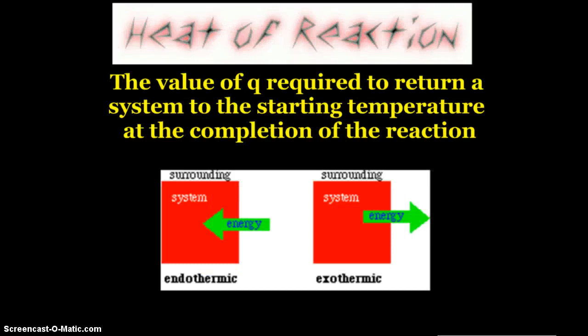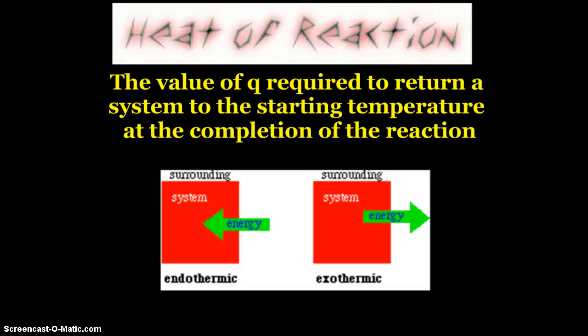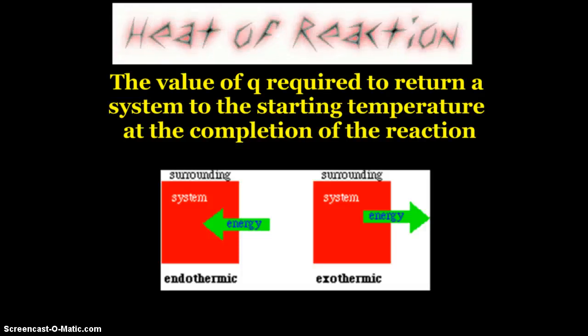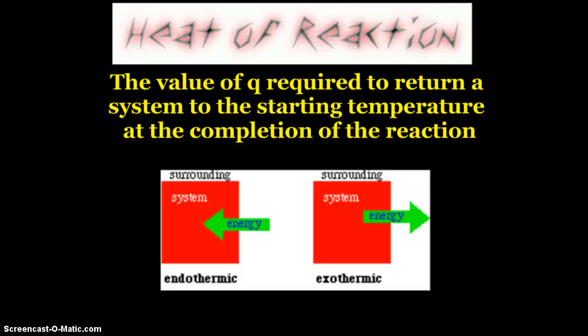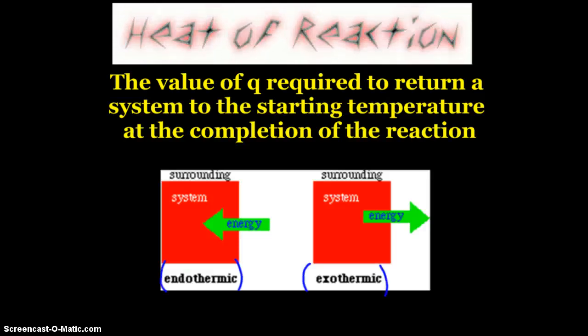The heat of reaction is the value of Q that's required to return a system back to the starting point. When you have a reaction with energy going into or out of the system, the heat of reaction is the value of Q that would be required to make it go back to where it came from. We could have a positive or negative Q value. We might have to add heat back to the system or remove heat from the system. This is where we see endothermic and exothermic reactions.